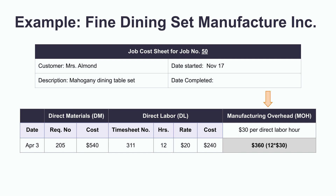Direct materials and direct labor are the actual costs, but the manufacturing overhead is a predetermined rate in proportion to the direct labor hours. Here it is estimated that the manufacturing overhead would be $30 per direct labor hour.